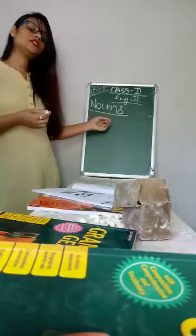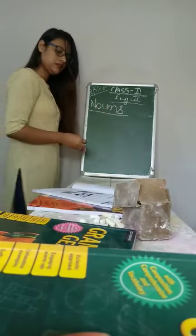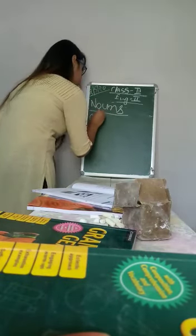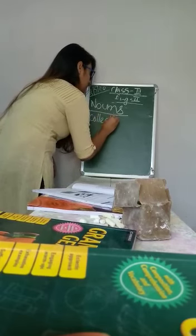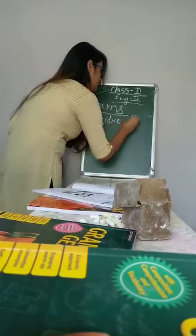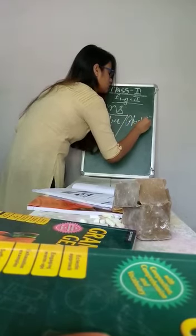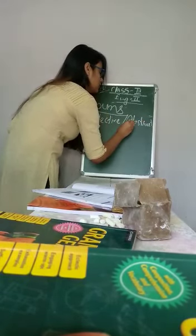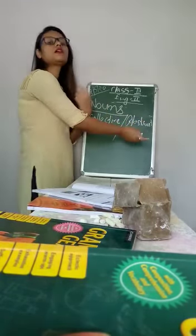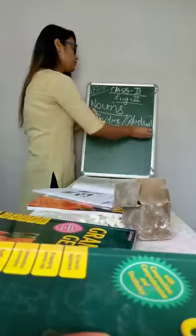So here we are going to study another 2 kinds of nouns and that is collective and abstract. Collective noun and abstract noun. So these are 2 different kinds of nouns.